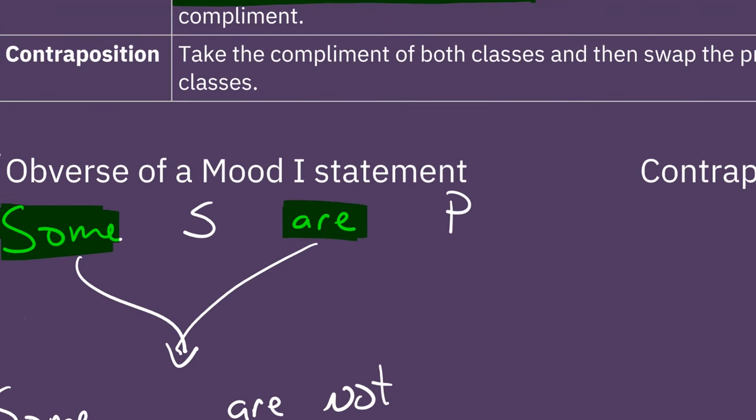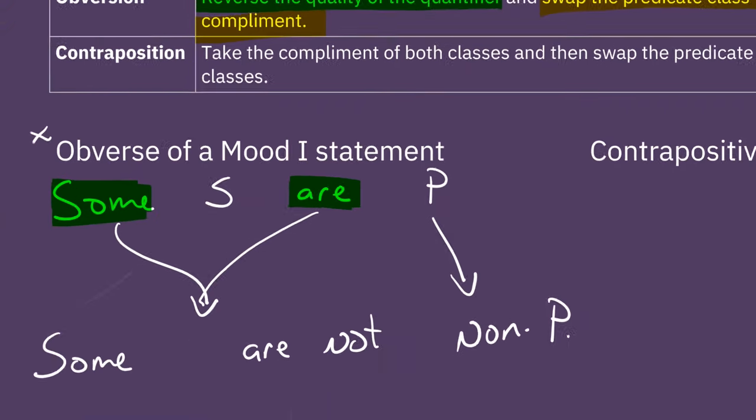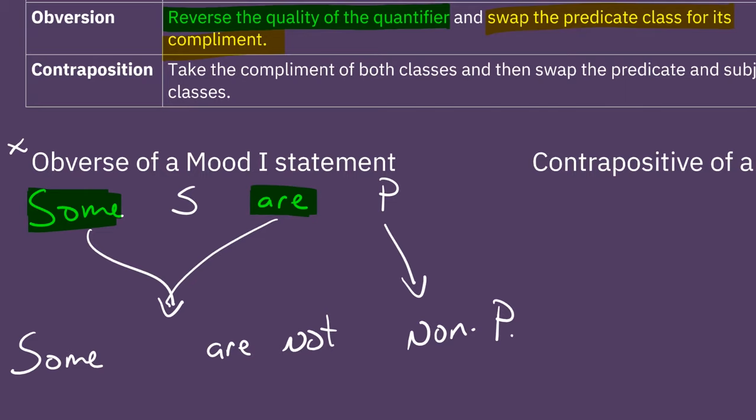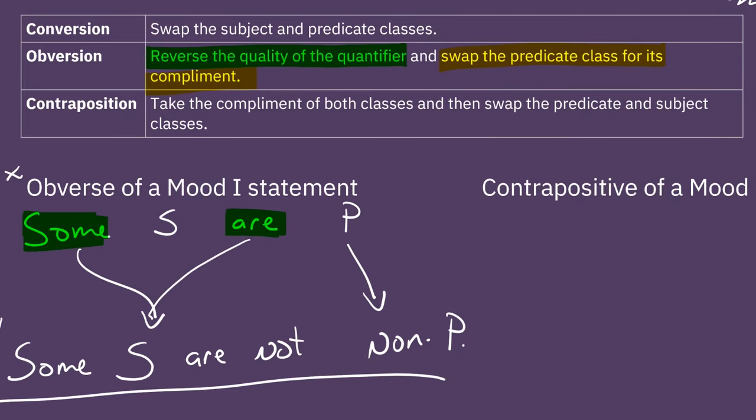That's step one. The second step is to swap the predicate class for its complement. And so here we just move P into non-P. And then the subject of the class stays the same. So we just fill in our S there. And there you have it. Some S are not non-P. It's a bit clunky, but this is how we're looking at things here. This is the obverse of a mood I statement.